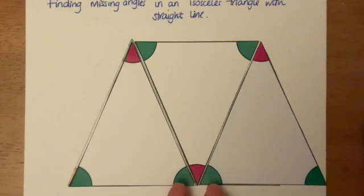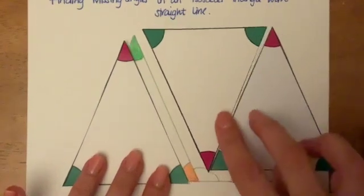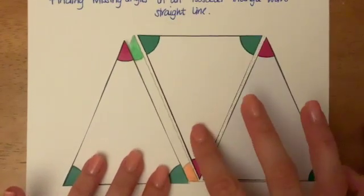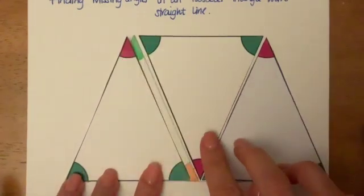So you can see there are two of the same and one different. So this little bit on the outside here is made up of one of the bottom angles and the top one.